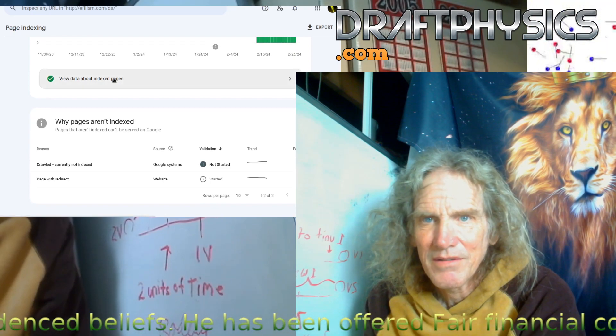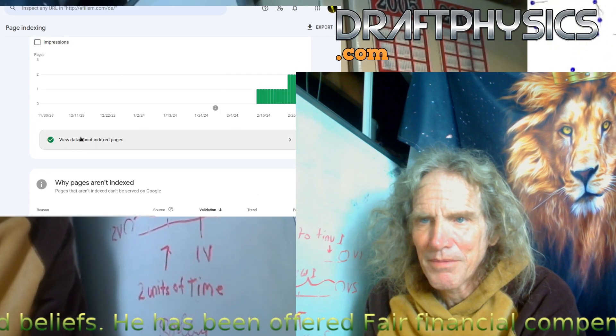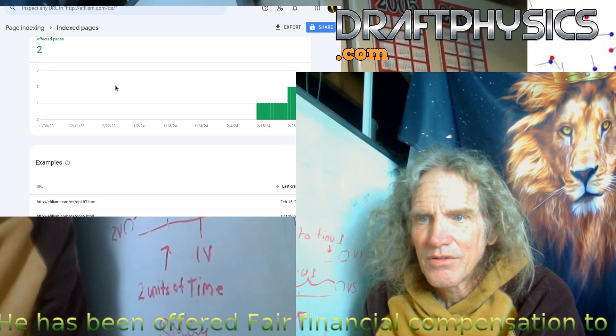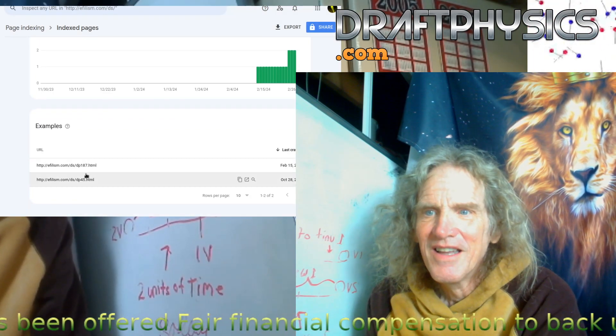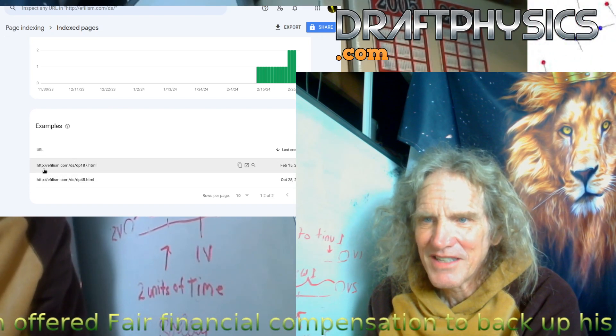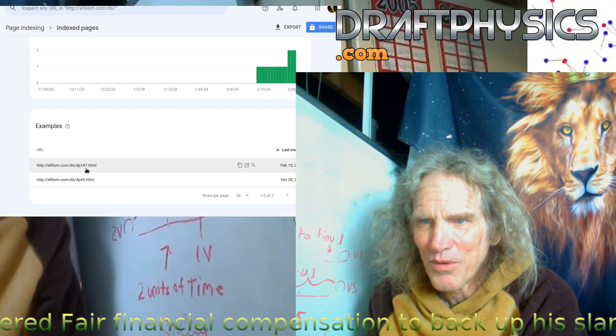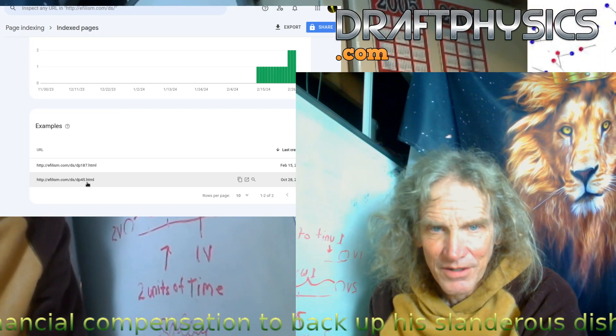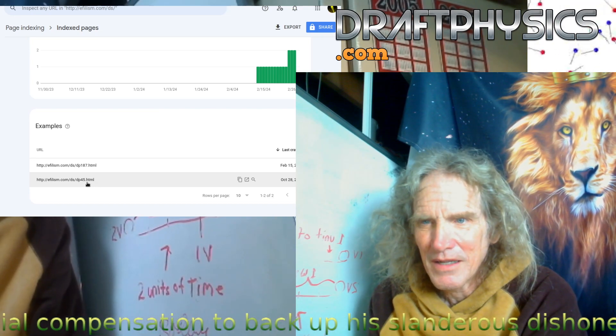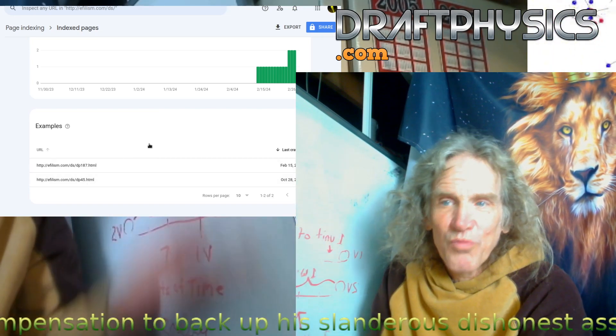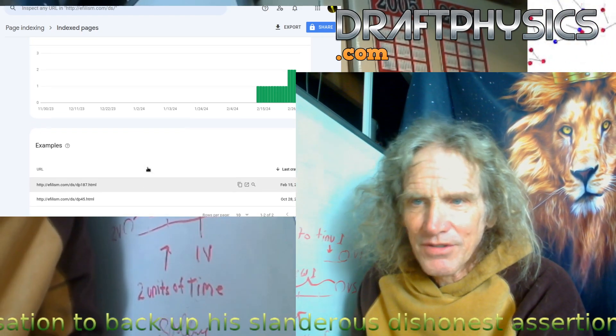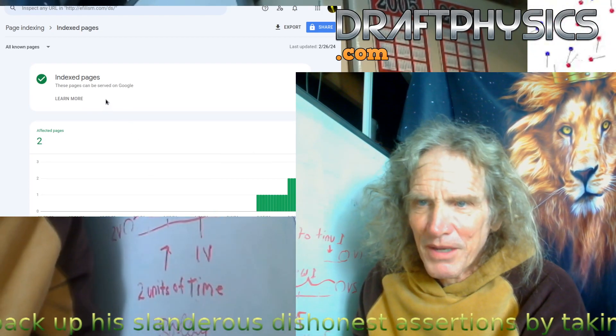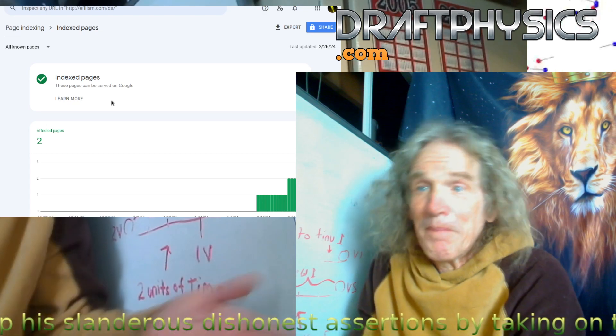So it only indexed two pages. Out of the thousands of video pages, there's these two. So DP 187 and DP 45, so out of the hundreds of videos on the website, they indexed these two pages for who knows what fucking reason, and absolutely nothing else on the website. Not the homepage, not any of the other pages.